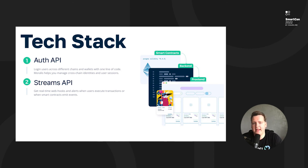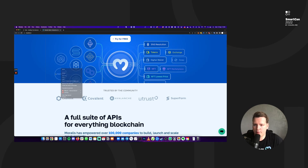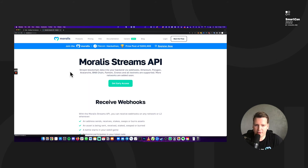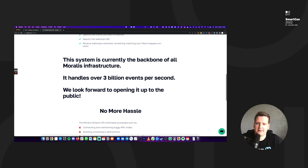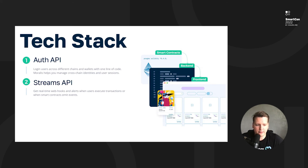Our Auth API unites Web2 and Web3 identities, making Web3 identities very easy to use and compatible with Web2 standards. Next is our Streams API — this is all about getting webhooks whenever something happens on-chain. Whenever a user mints, burns, or does anything on-chain, we give you real-time notifications. It's launching this week with early access available, and it's one of the key systems that has been powering Moralis for a very long time, now opened to the public.